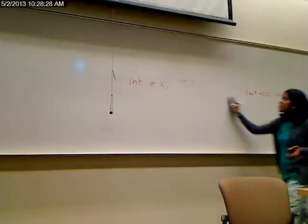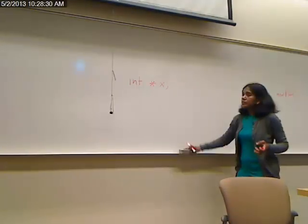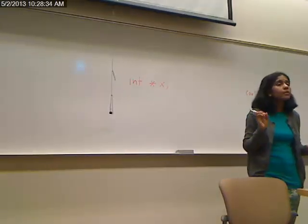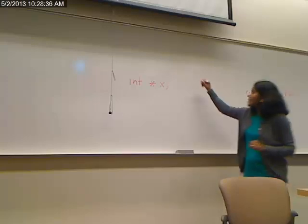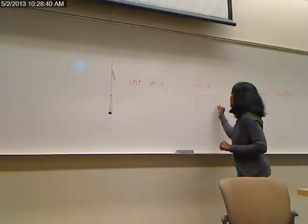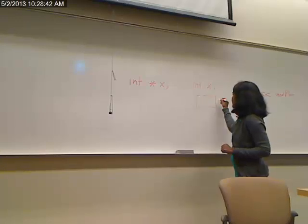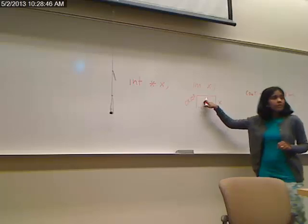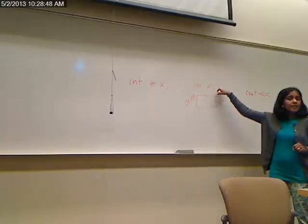So we say a pointer means it points to something. So is that x pointing to anything right now? No, because we haven't told it to point to anything. We simply told it I want a pointer created. If you say int x, all you're doing is you're saying allocate memory for x. So it allocates memory. Does it put anything in there? No, not until you put something in there.